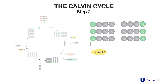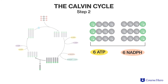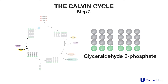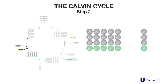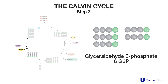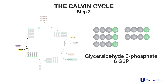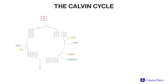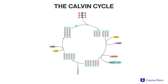In the second stage of the cycle, ATP and NADPH convert the six molecules of 3-PGA into a different three-carbon compound, glyceraldehyde-3-phosphate, or G3P. One of these G3P molecules exits the cycle and will be used as the starting material to make other organic compounds, such as glucose and other carbohydrates. The remaining G3P molecules get recycled into RUBP and the cycle repeats. It takes six turns of the cycle to make one molecule of glucose.